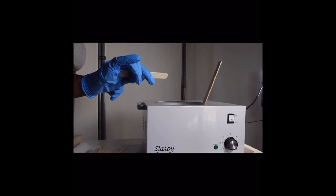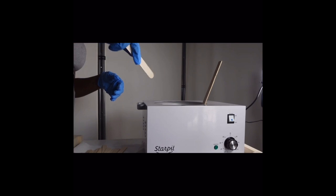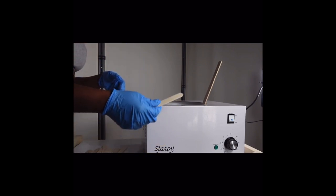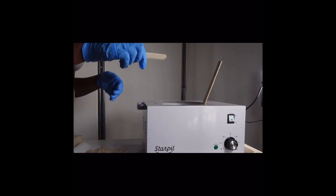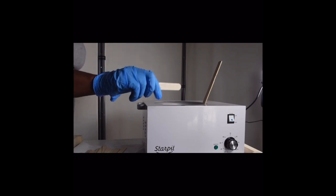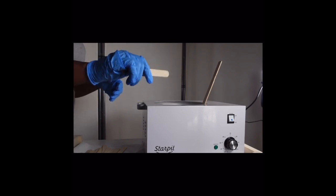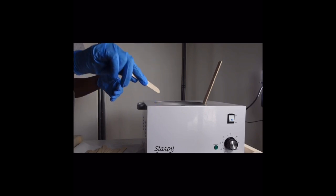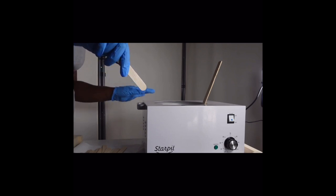When picking up wax, you want to ensure that you scoop the wax. Make sure that your stick is going down in the wax in a downward motion, scooping it up. And then once you get the wax on the stick, you want to twirl it backwards.